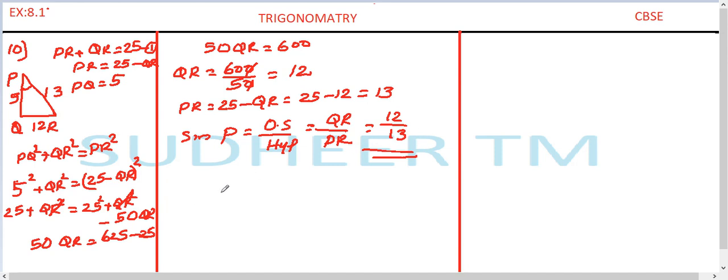Secondly, what is asked to evaluate cos P. By definition, it is adjacent side of P divided by hypotenuse. The adjacent side is PQ, so I can write PQ divided by hypotenuse is PR. That is equal to 5 divided by 13. Solved.